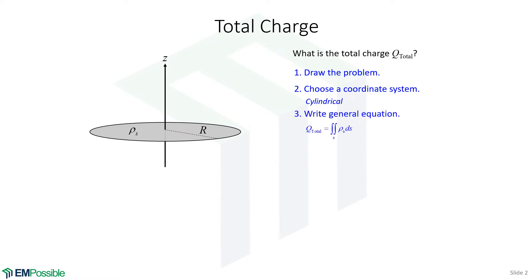Write the general equation. When we laid out the recipe in the notes, we had a table. The columns were line charge, surface charge, volume charge. The rows were total charge and electric flux. We pull an equation out independent of the coordinate system, depending what we want to calculate. Here is total charge for a surface charge, and that's the equation that we pull out.